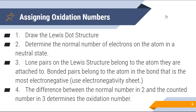So how do we assign oxidation numbers? If it is ionic, it's simply the charges — plain and simple. However, this is not always the case, particularly with covalently bonded compounds. So we follow these steps: number one, draw out the Lewis structure. Two, determine the normal number of electrons on the atom in a neutral state. Three, lone pairs on the Lewis structure belong to the atom they are attached to. Bonded pairs belong to the atom that is the most electronegative — think closest to fluorine. The difference between the normal number and the counted number determines your oxidation number. A little bit confusing, but when you see it in practice, it's really not that difficult.